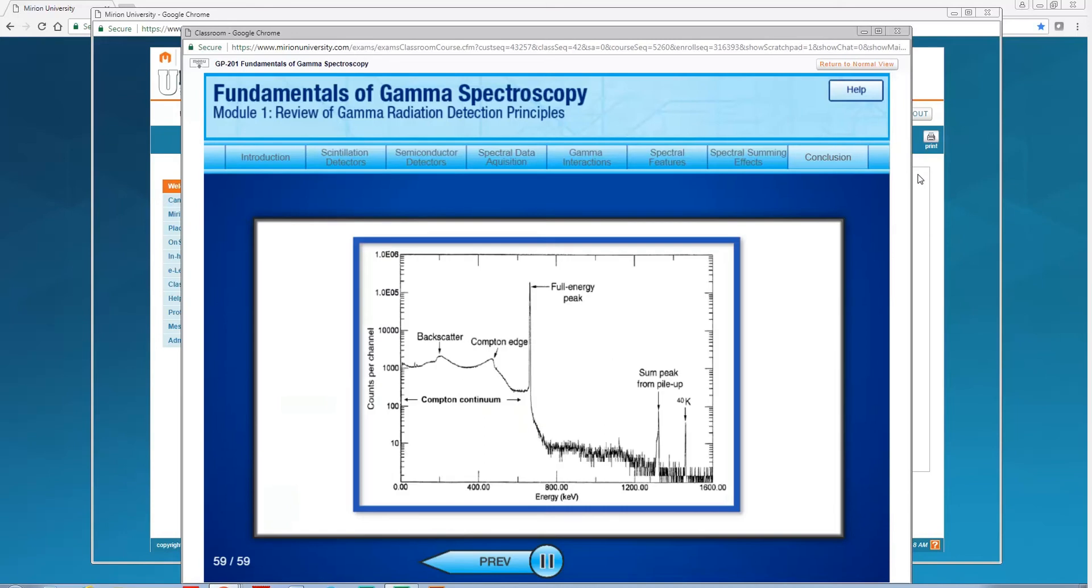Various features we commonly observe in our acquired spectra include full energy peaks, the Compton continuum, the Compton edge, and summation peaks due to random coincidence summing and true coincidence summing.